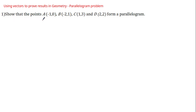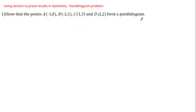Show that the points A(-1, 0), B(-2, 1), C(1, 3) and D(2, 2) form a parallelogram. So we've been given four coordinates here and we've been asked to show that these coordinates form a parallelogram.